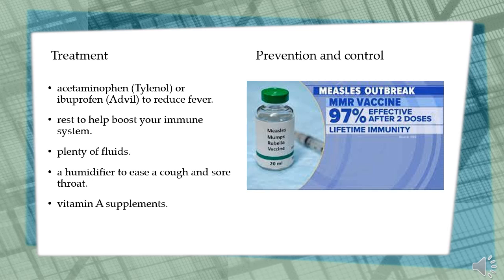Prevention and control: The measles vaccine is most commonly administered as part of a combination of live attenuated vaccines that include measles, mumps, rubella, and varicella (MMRV), or measles, mumps, and rubella (MMR). This vaccine contains weakened or killed forms of the virus, which stimulate the body's immune system to recognize the virus as foreign. Therefore, the immune system can more easily identify and fight any of these viruses that it encounters in the future.